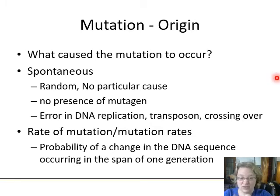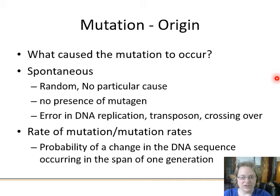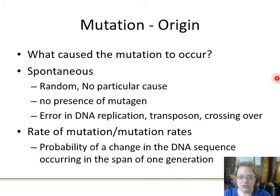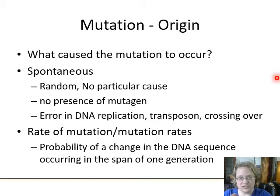The origin of a mutation comes down to two reasons: it happened randomly — a spontaneous mutation with no chemicals involved — perhaps a cellular error in DNA replication, a transposon jumping, or something during crossing over. We can look at mutation rates, the probability of a change in the DNA sequence occurring within one generation, to assess what's happening.